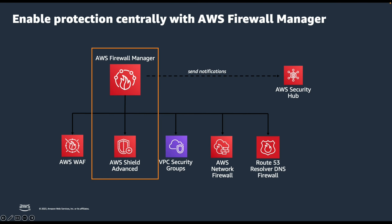Firewall Manager also helps you manage other services like AWS Network Firewall, WAF, VPC Security Groups, and Amazon Route 53 Resolver DNS Firewall. You can also integrate Firewall Manager with Security Hub to monitor Shield Advanced protected resources. For example, when Shield Advanced detects an anomalous event matching a DDoS attack pattern targeting one of the protected resources in any AWS account within scope, this will generate a finding visible in the Security Hub console.